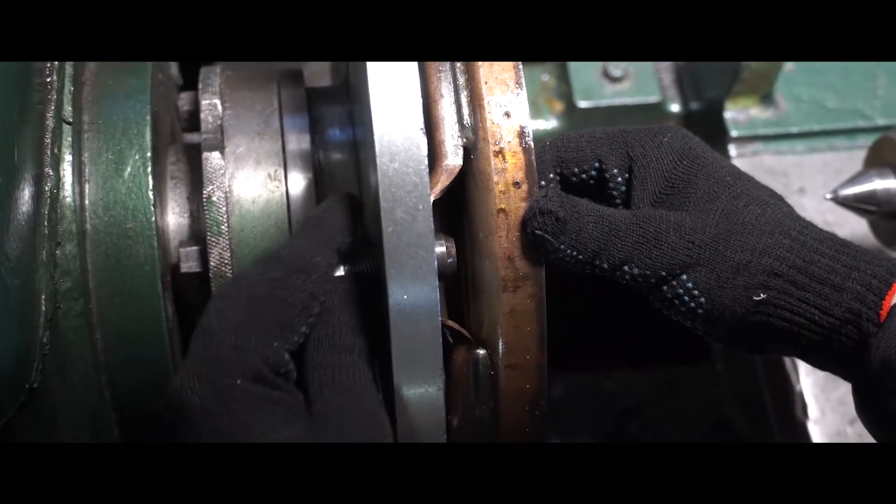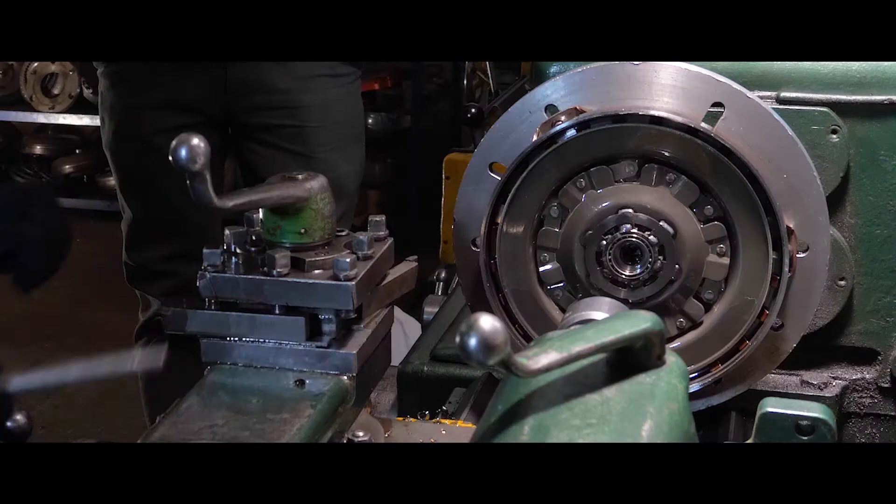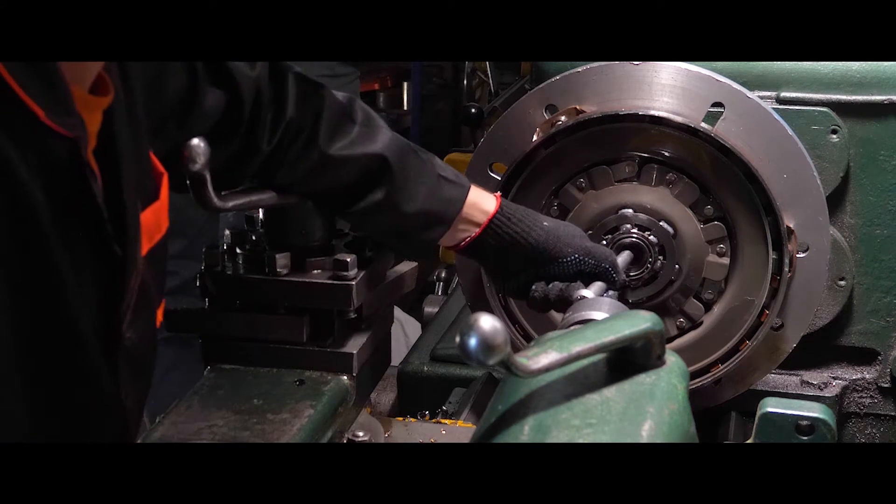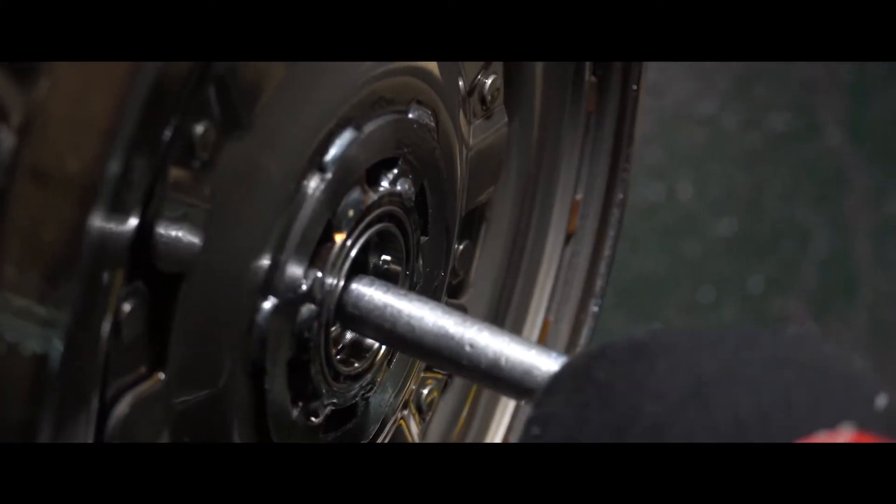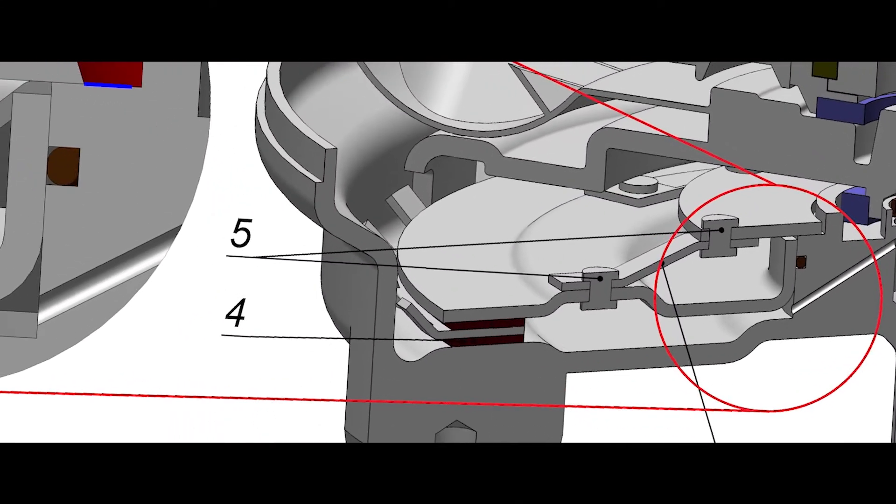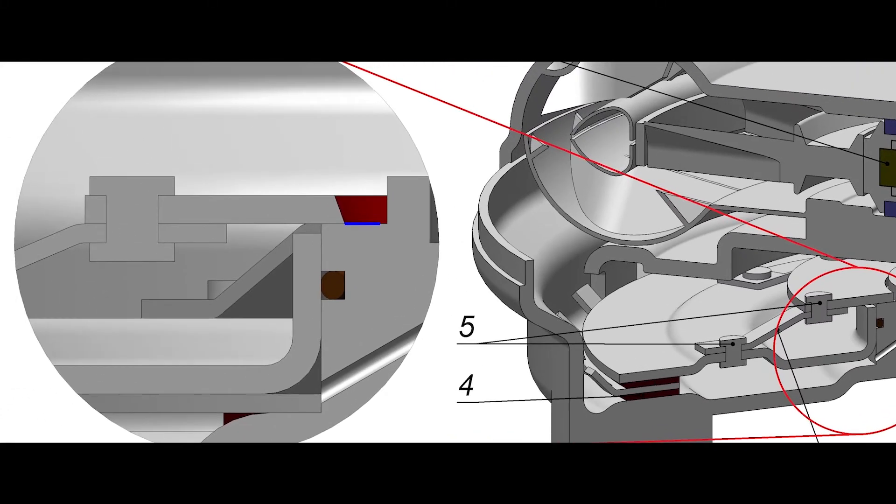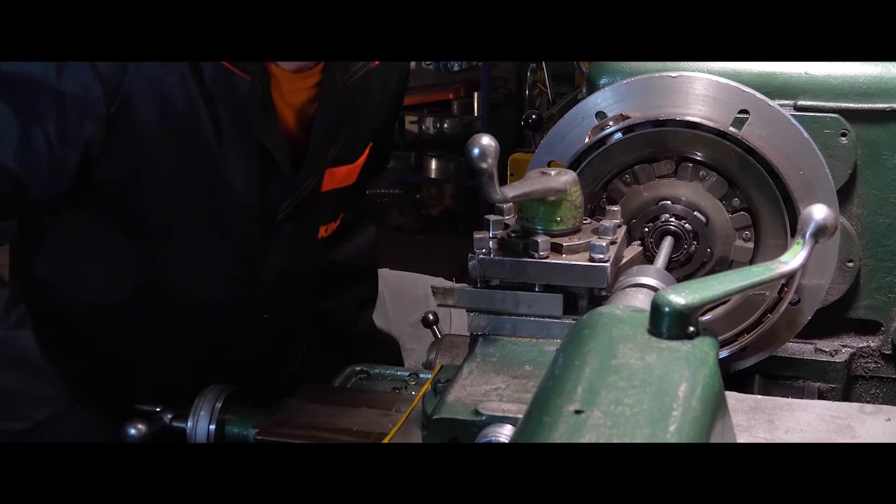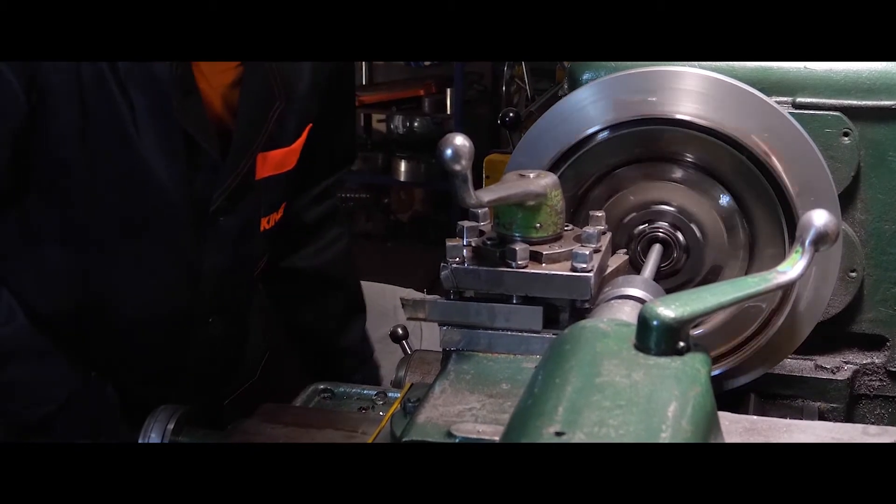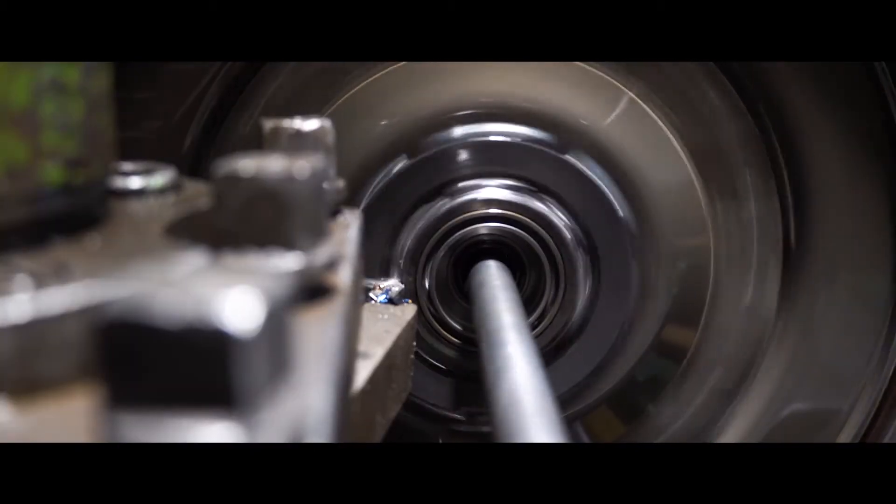The next step is to gain access to the friction plates. As you can see, this TC was previously repaired, as evidenced by the non-factory welded seam in the place where the support disc was attached to the cover. For this, the cover is mounted on the machine where the turner cuts off the weld seam between the cover and the platter.